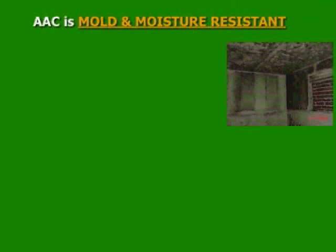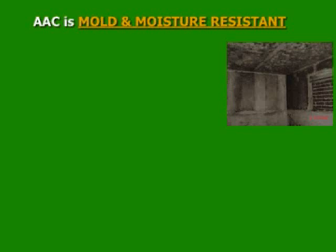AAC is mold and mildew resistant. I think everyone has seen this kind of picture — a concrete building with one wall of drywall, full of mold and mildew. This will never happen with AAC, because AAC is a mineral-based, non-organic building material. For example, the gypsum in the drywall is non-organic too. However, the paper on the drywall is organic and creates mold and mildew.